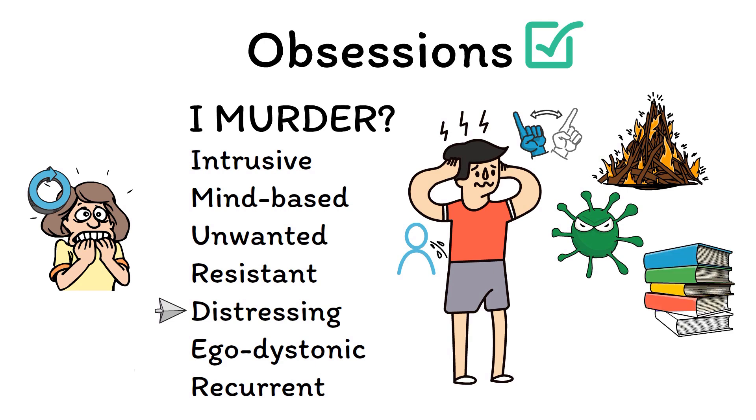Symmetry, like an obsession that certain objects in the house have to line up exactly, and taboo thoughts including topics such as sex and religion, like someone who has recurrent blasphemous thoughts about having sex with religious figures. Most people with OCD have obsessions in more than one of these areas.